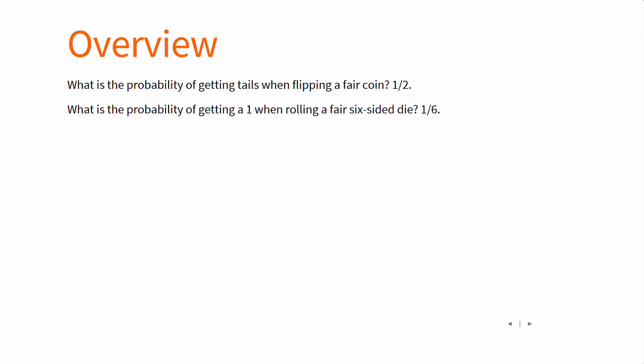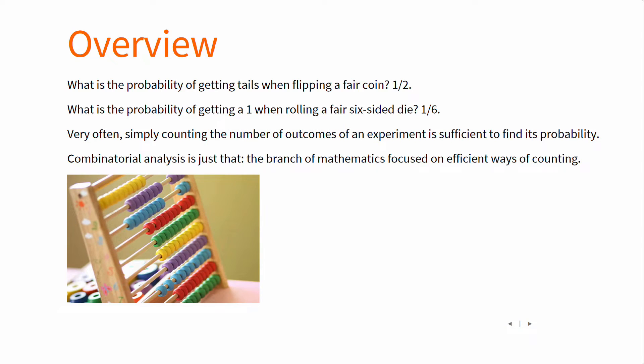But what is this 1 over something number? Well, it's the number of outcomes. Counting the number of outcomes to an experiment is often sufficient to find its probability. Combinatorial analysis is just that, the branch of mathematics focused on efficient ways of counting.